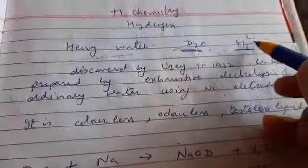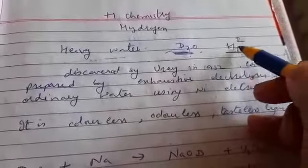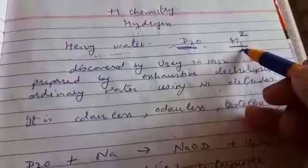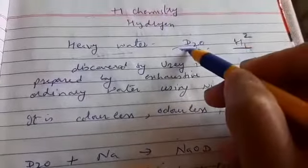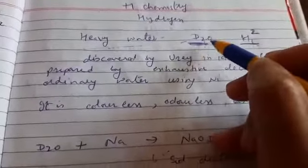The second isotope of hydrogen has atomic number 1 and mass 2. This second isotope of hydrogen is also known as deuterium, so D2O is known as heavy water. It is different from hard water.